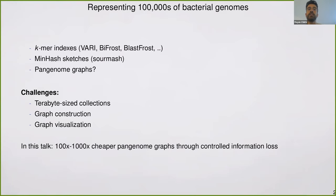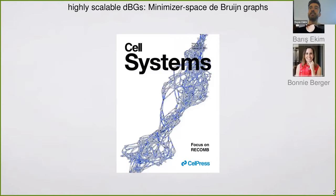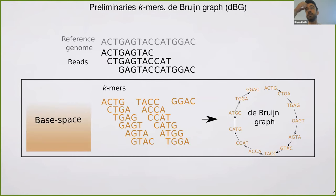In this talk, I will discuss a technique that enables 100x to 1000x cheaper pan-genome graph construction through a controlled loss of information. It's based on the technique we introduced with Varish Ekim and Bonny Berger, called minimizer space de Bruijn graphs, introduced this year at Recombe. We were happy to make the cover of the Cell Systems issue last October. I will briefly talk about what minimizer space de Bruijn graphs are, and as a preliminary, I need to introduce the classical de Bruijn graph.